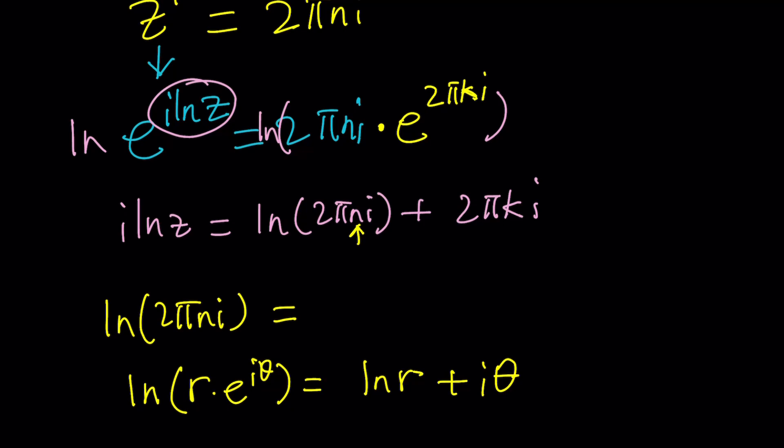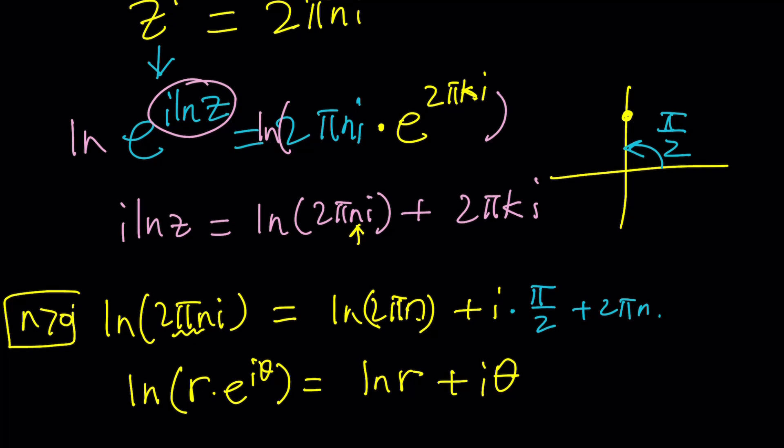The modulus here is 2 pi n if n is positive. Let's just assume n is positive. Then this is going to become ln 2 pi n, which is the log of the modulus, plus i times the theta. What is the theta in this case? If you have a positive multiple of i, then the angle would be pi over 2. So it's going to be i times pi over 2. But we can add multiples of 2 pi to this. Let's add 2 pi m.